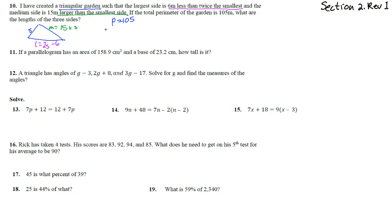The perimeter of a triangle is just all the sides added together: small plus medium plus large. Substituting everything in, we get 105 equals the smallest side s, plus (s plus 15) for the medium, plus (2s minus 6) for the largest side.